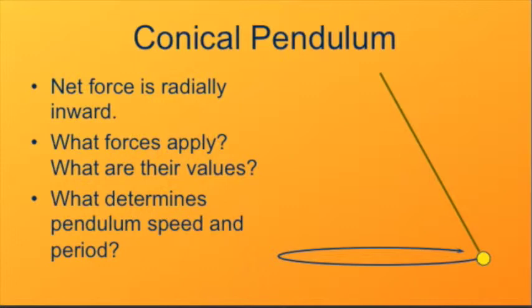What determines the pendulum's speed and period? We might expect a number of things. We might expect that the mass of the pendulum makes a difference. We might expect the length of the pendulum makes a difference. We might expect that the angle at which it spins makes a difference. We'd have to actually analyze it to find out how much of this is true.